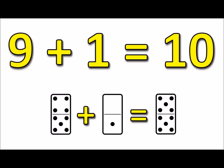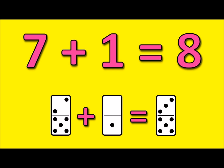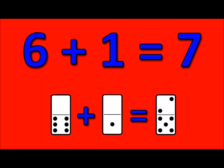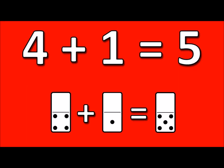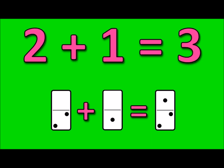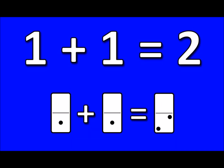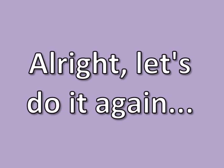9 plus 1 is 10, 8 plus 1 is 9, 7 plus 1 is 8, 6 plus 1 is 7, 5 plus 1 is 6, 4 plus 1 is 5, 3 plus 1 is 4, 2 plus 1 is 3, 1 plus 1 is 2, 0 plus 1 is 1.